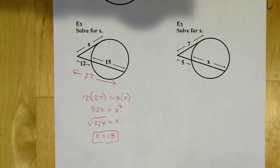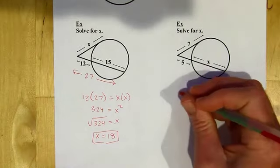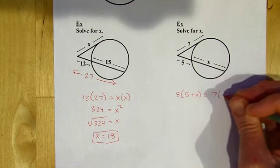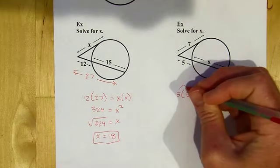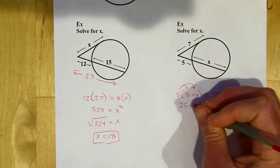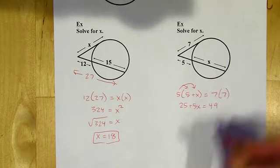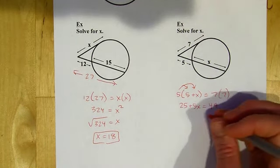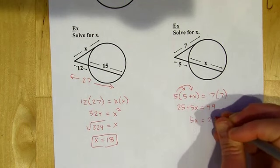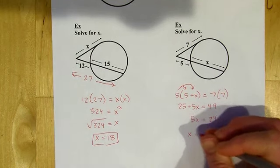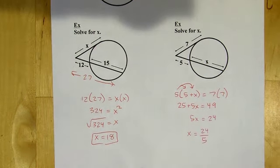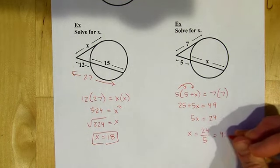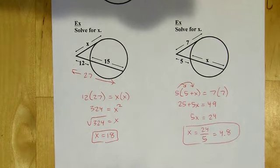You can pause and try this last one. Part on the outside times the whole thing equals part on the outside times the whole thing. Subtracting 25 from both sides, then dividing by 5 — it doesn't go in evenly, so you can leave it as a fraction or write it as a decimal. And that's the final answer.